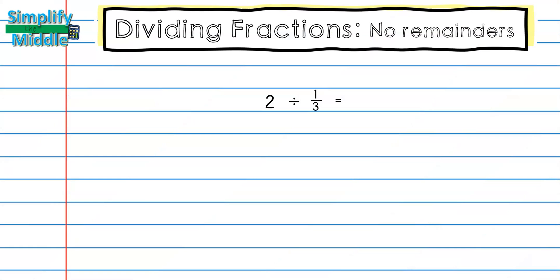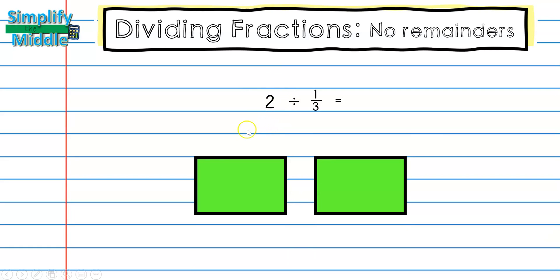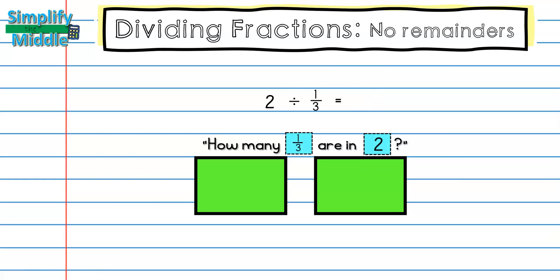Let's take a closer look at that problem. We already determined that the first number is my dividend and that's what I'm starting with. So I'm going to draw a model where I have two wholes that represent my dividend. Next, I'm going to ask myself the question: how many groups of 1/3 are in two? In order to determine one-thirds, I first need to cut my whole into thirds. Now I'm ready to count my groups.